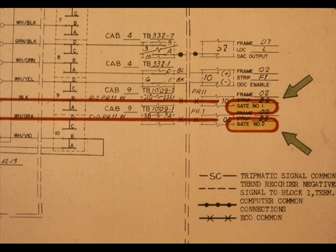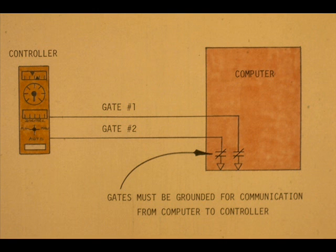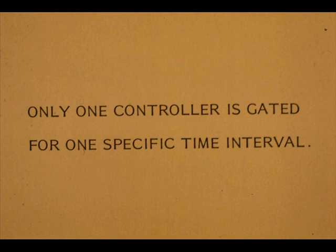The computer produces four inputs to the controller. Two of the inputs are called gates. If the computer wishes to communicate with the controller, it must ground both gates 1 and 2 of that controller. Only one controller at a time can be gated for a specific time interval.